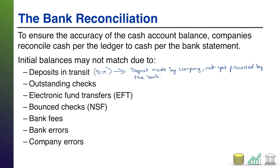I used the example of the night slot, but it could also be an armored car that picks up cash from a specific location. Once the car takes it, as far as you're concerned, that's a deposit. But the armored car is going to make its rounds, and until it gets to the bank, it's a deposit literally in transit. Basically: deposit made by the company, not yet processed by the bank.